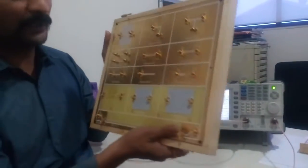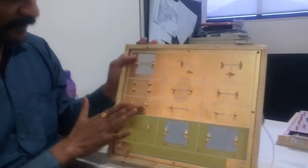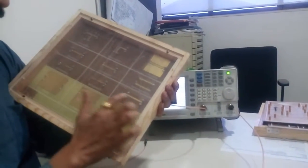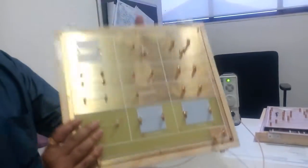This is an FR4 board with 1.6 mm thickness. This side is a plain ground and this side is actually the active side. We call it the strip side and this is your ground side.